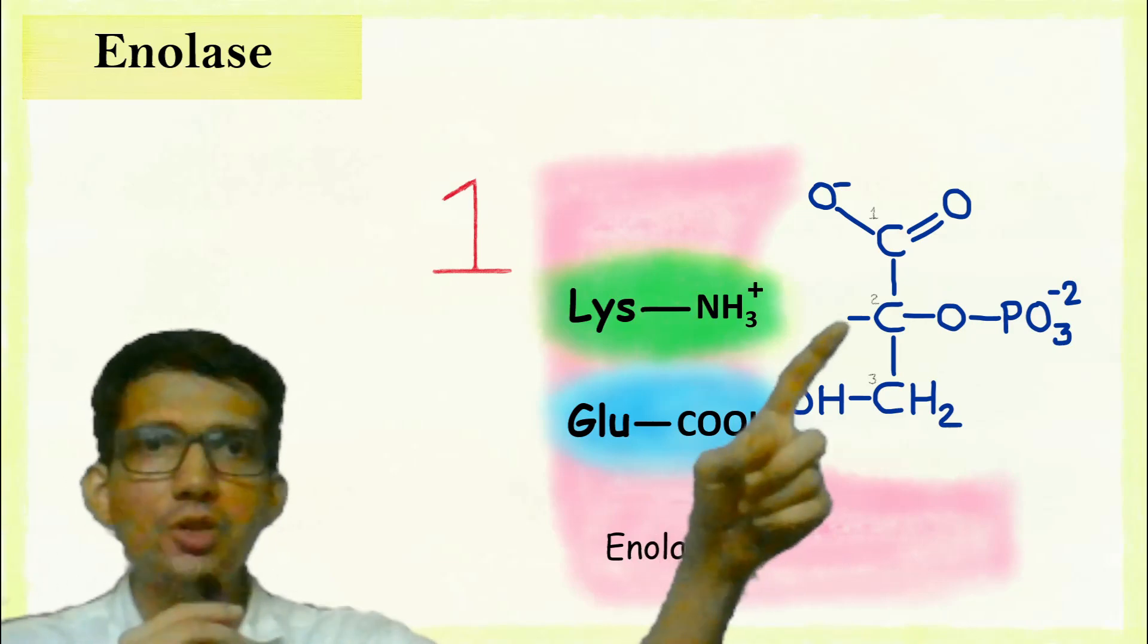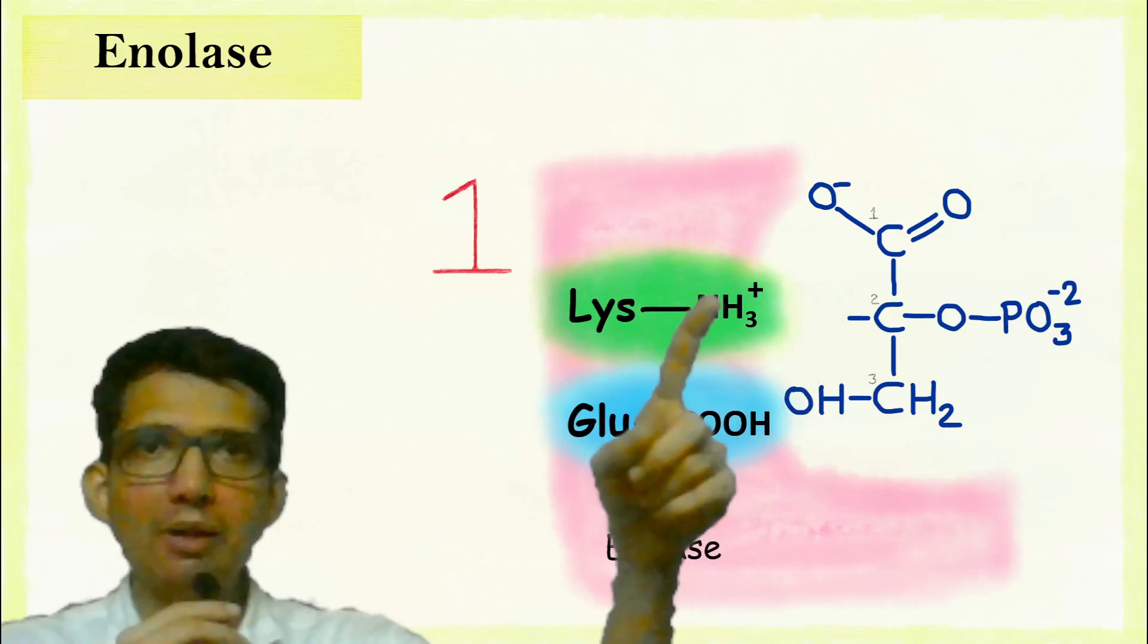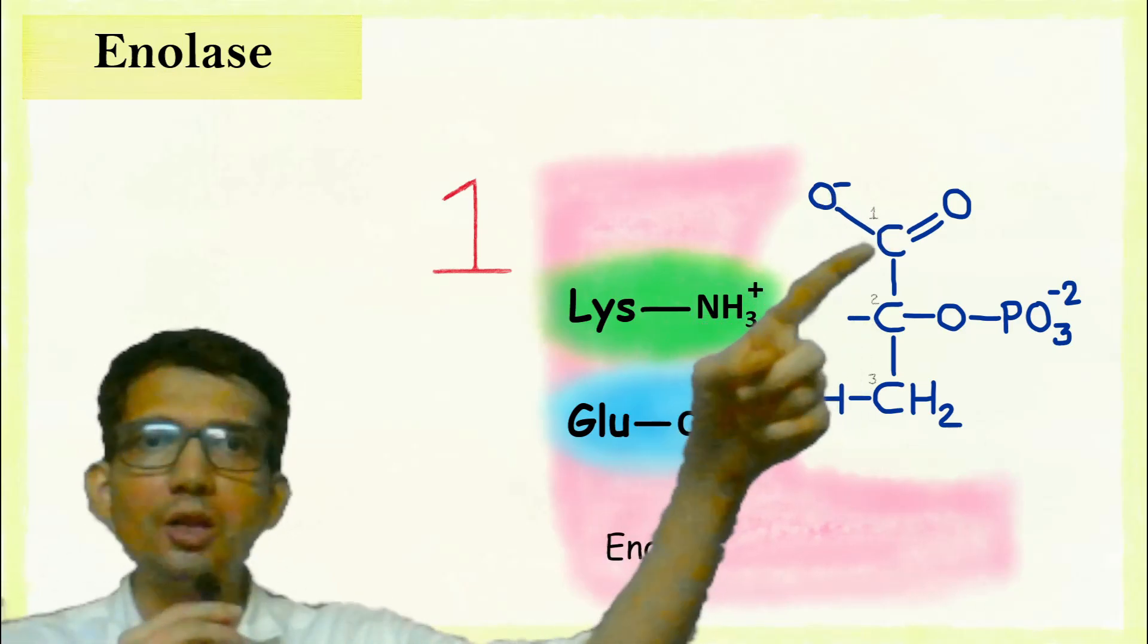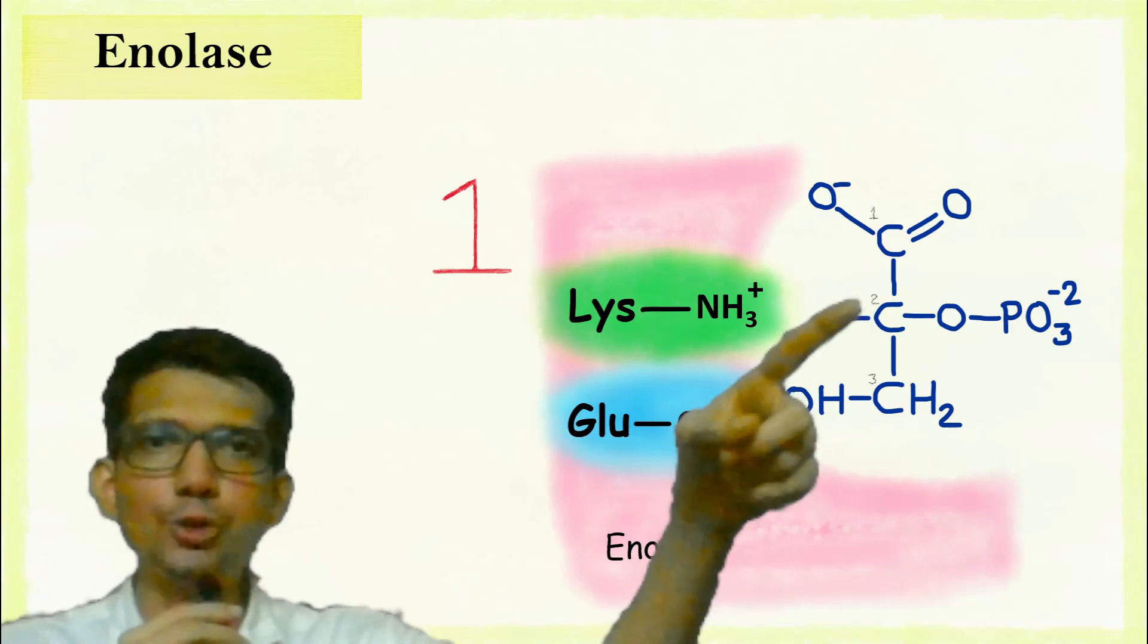Since the hydrogen at C2 is taken away by lysine, this double bond over here shifts between C1 and C2.